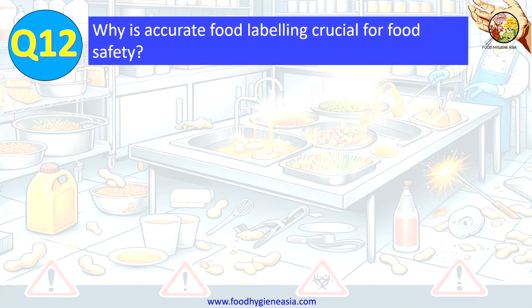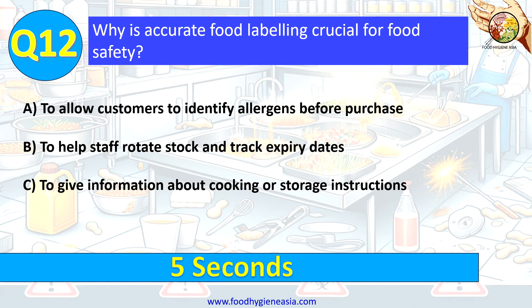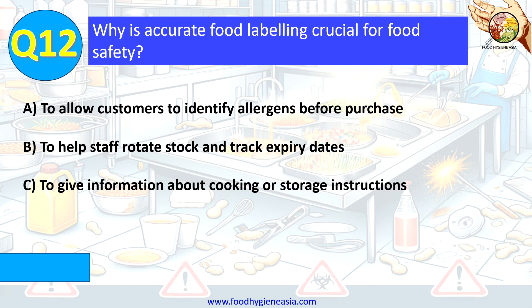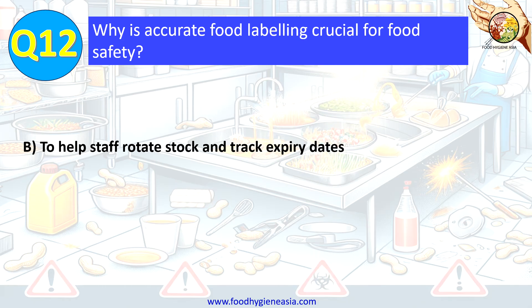Question 12. Why is accurate food labeling crucial for food safety? A. To allow customers to identify allergens before purchase. B. To help staff rotate stock and track expiry dates. C. To give information about cooking or storage instructions. The correct answer is B. To help staff rotate stock and track expiry dates.